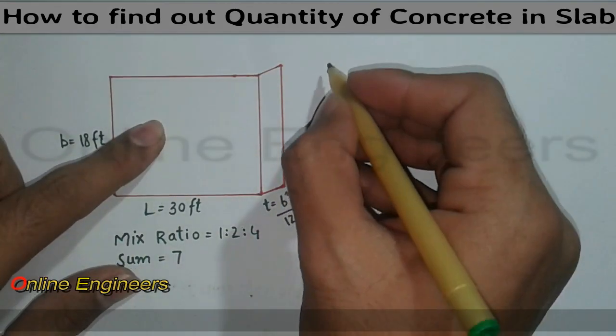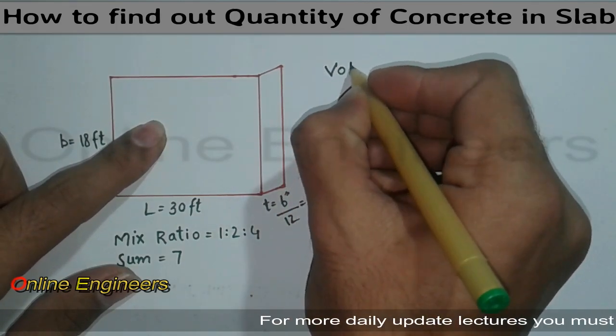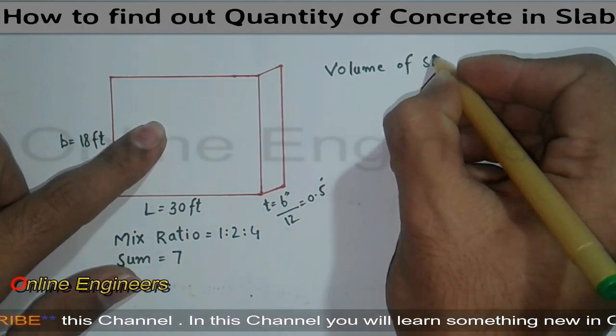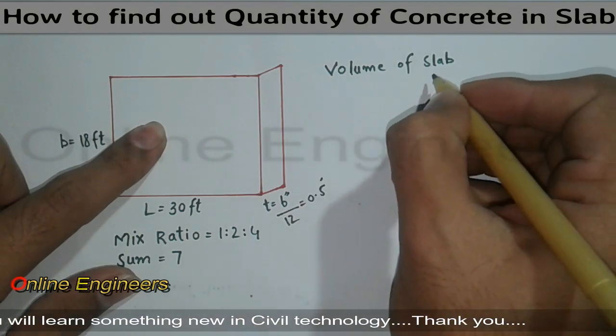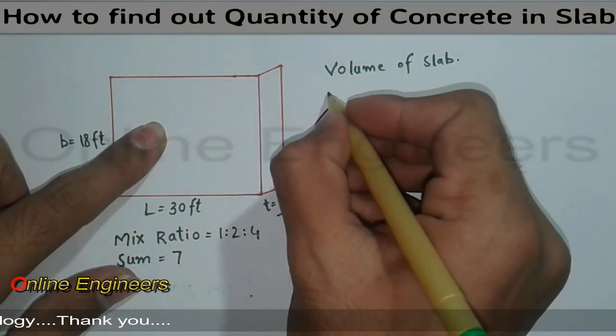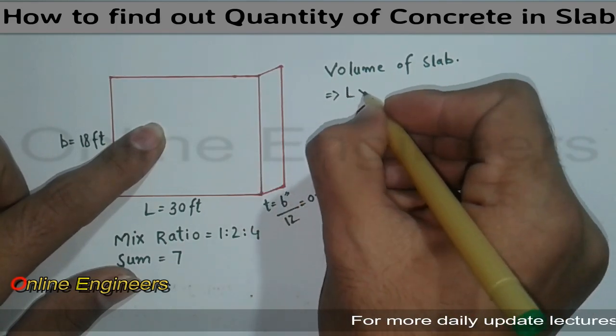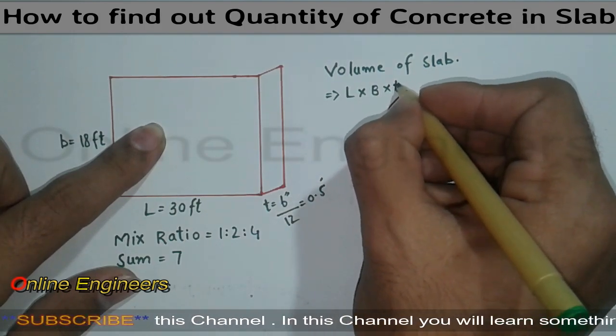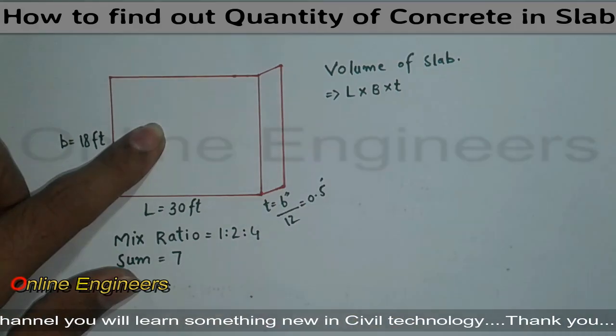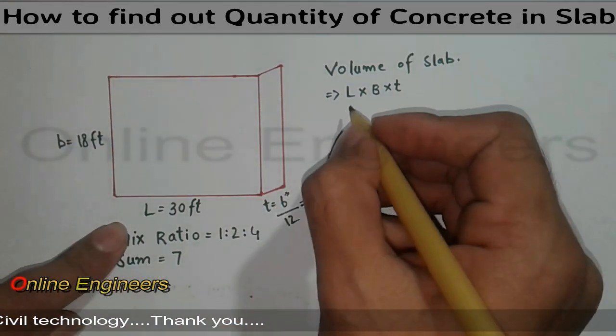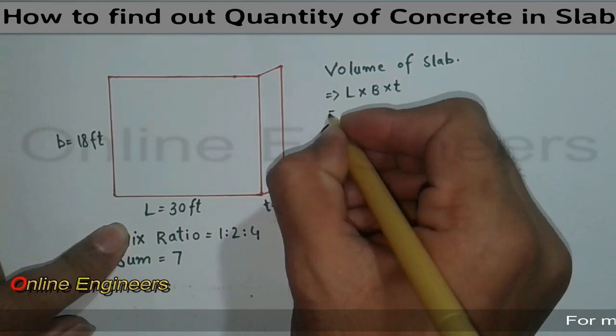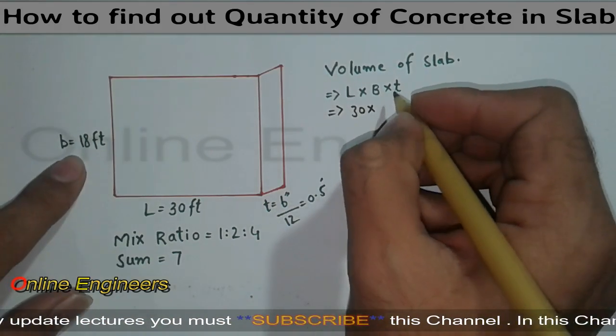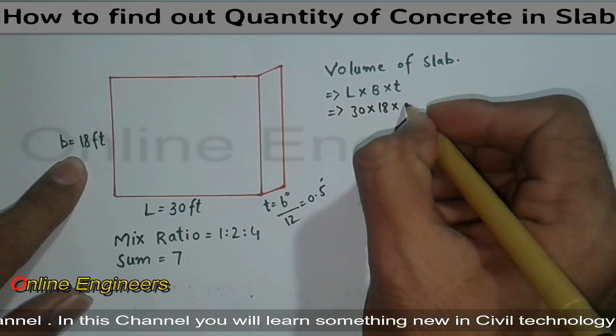We have concrete mix ratio 1:2:4. Sum is 7. Now I want to find out volume of the slab. We have formula for volume: length multiplied by breadth multiplied by thickness. Now we can easily find volume of slab. Length is 30 feet, breadth is 18 feet, and thickness is 0.5 feet.